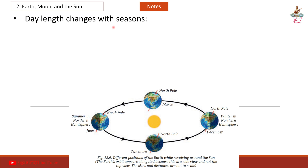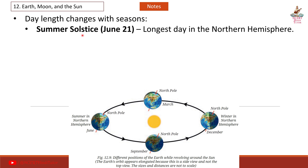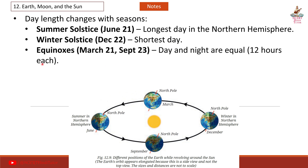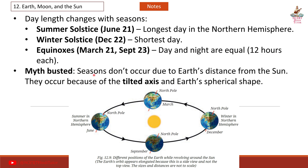Day length changes with seasons. Summer solstice: June 21, the longest day in the Northern Hemisphere. Winter solstice: December 22, the shortest day. Equinoxes: March 21 and September 23, when day and night are equal — 12 hours each. Myth busted: seasons don't occur due to Earth's distance from the sun. They occur because of the tilted axis and Earth's spherical shape.